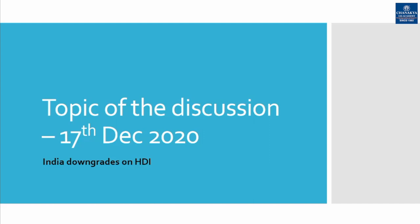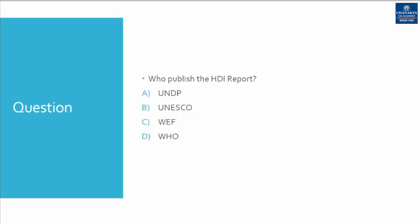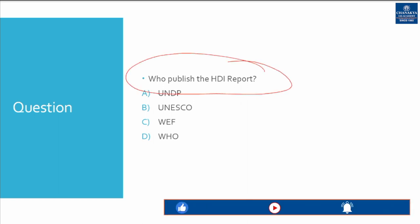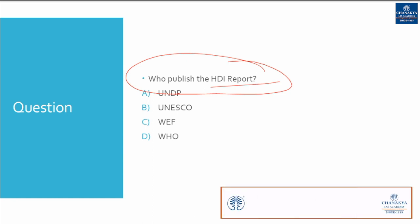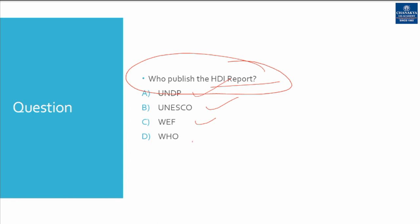Hello my dear friends and Chanakya IAS fraternity. We will be beginning with today's topic of discussion, that is Human Development Index. Before going into the discussion, I would like to put forward a simple question: who published the Human Development Index report? Your options are United Nations Development Program, UNESCO, World Economic Forum, or WHO.